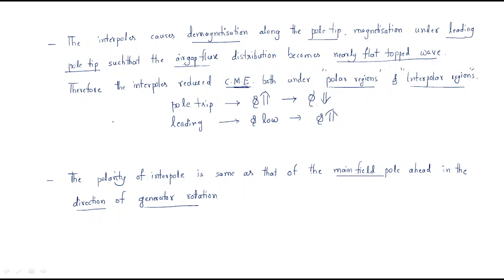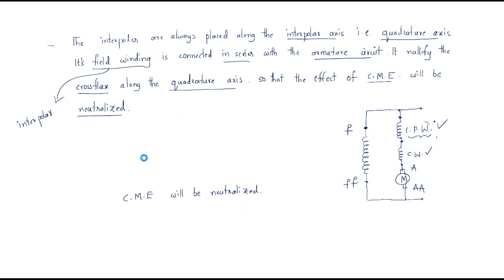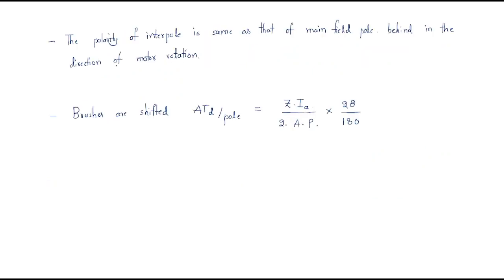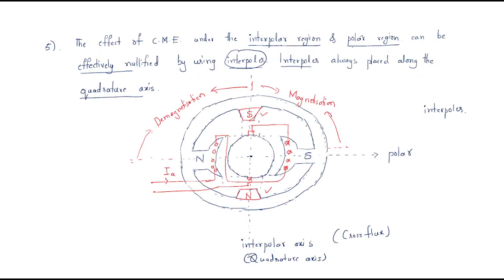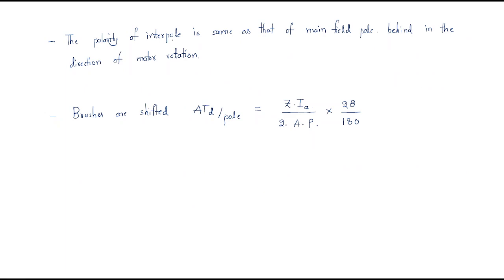In the last session we discussed the effects and remedies of cross magnetizing effect, including compensating winding and interpole winding. Here, the polarity of the interpole is the same as that of the main field pole behind in the direction of motor rotation. So if the motor rotates in this direction, the south pole will become the interpole of the north pole.